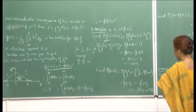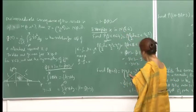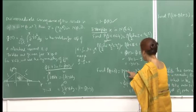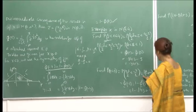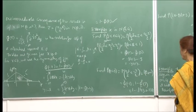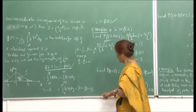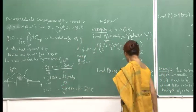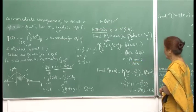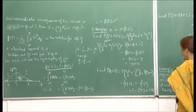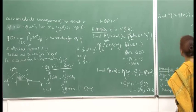Find P(x < 0) for this variable. Here again, I make the transformation: (x − 2)/2 < (0 − 2)/2, so this is P(Z < −1), which is Φ(−1). Using our formula, Φ(−1) = 1 − Φ(1). Φ(1) is already known as 0.8413. So this is 1 − 0.8413 = 0.1587.